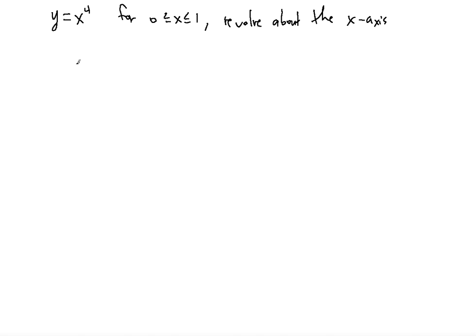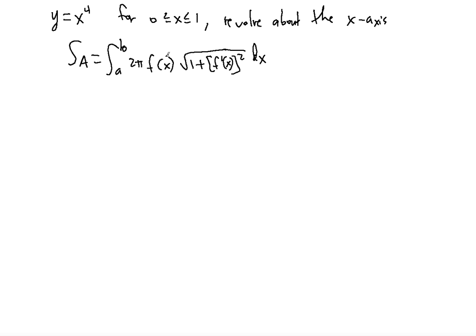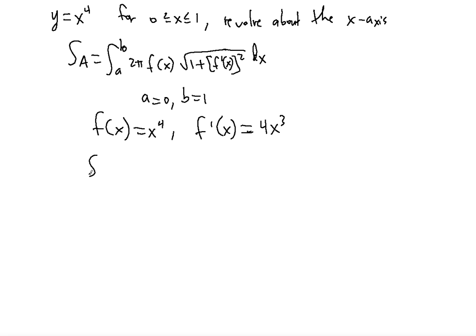Since we're revolving about the x-axis, we'll use the famous surface area formula: from a to b, 2π·f(x)·√(1 + (f'(x))²) dx. Here a equals 0 and b equals 1. The function value is x to the fourth, and the derivative is 4x to the third. So the surface area integral is from 0 to 1: 2π·x⁴·√(1 + (4x³)²) dx.